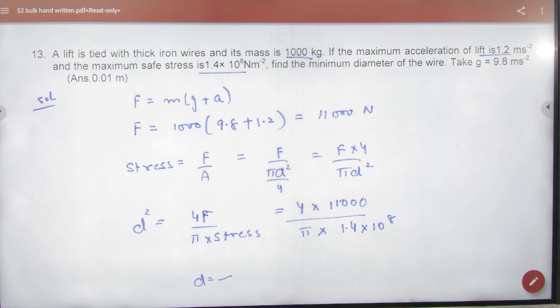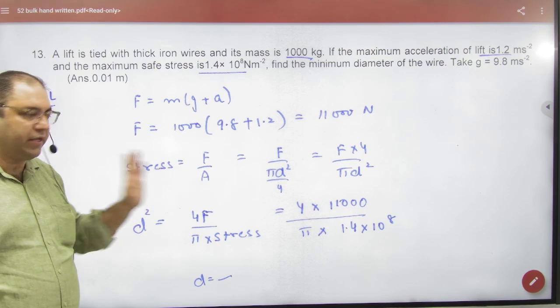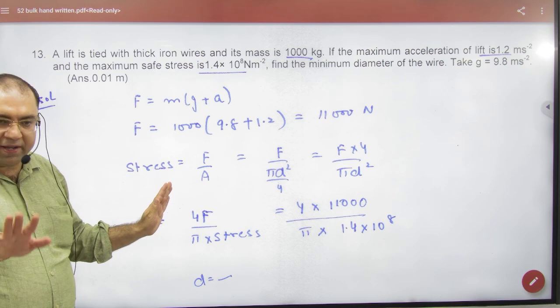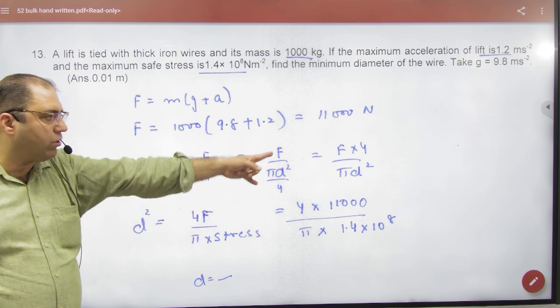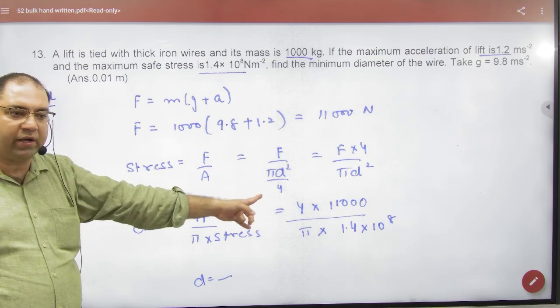Area kya hota hai: pi r square, diameter ki form me pi d square by 4. Force, so ye aapke paas stress ka formula a gaya: force by area.